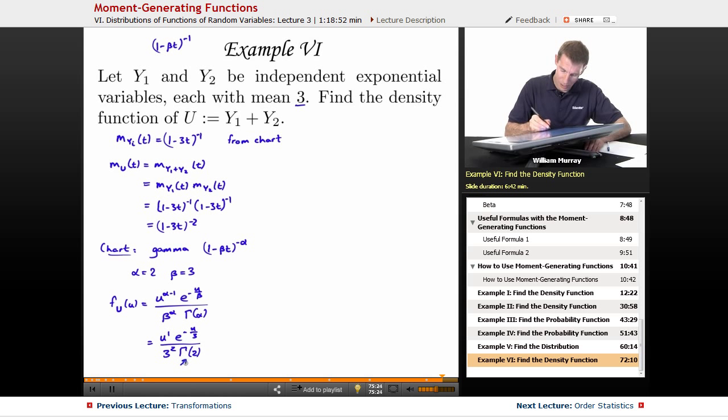Gamma of 2, remember, is 2 minus 1 factorial, so 1 factorial is just going to be 1. It's easy to work out gamma of a whole number because it's related to the factorial function. So let me simplify that. F sub u of u is u times e to the negative u over 3 divided by 3 squared is 9. Oh, and my range for gamma distribution is u goes from 0 to infinity.